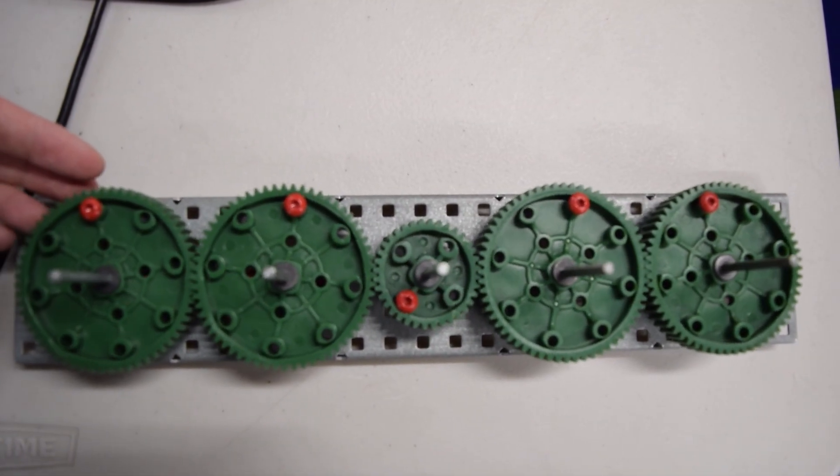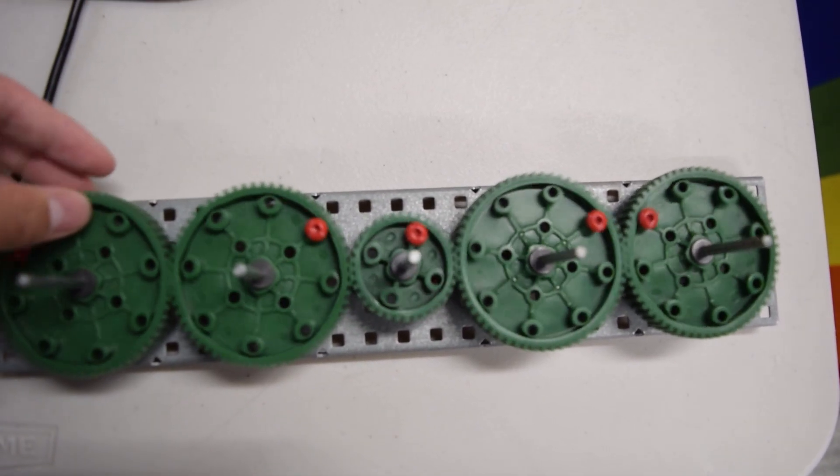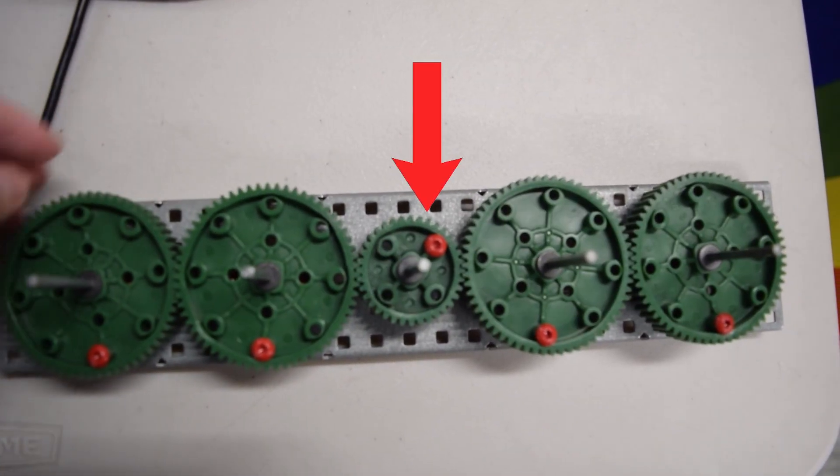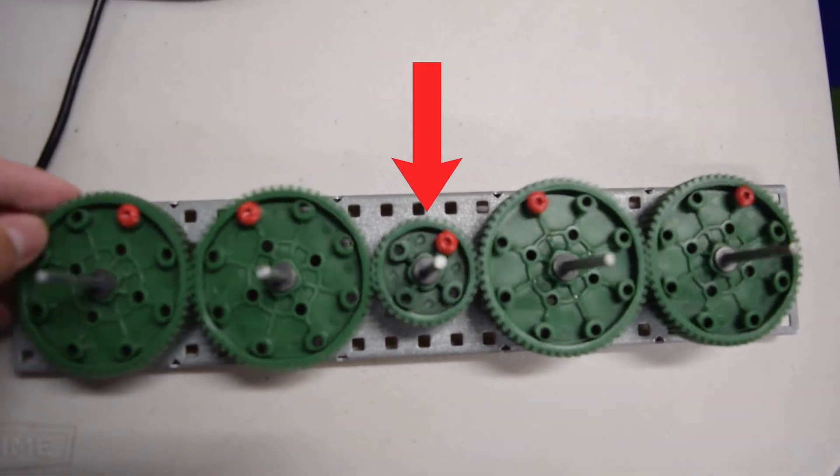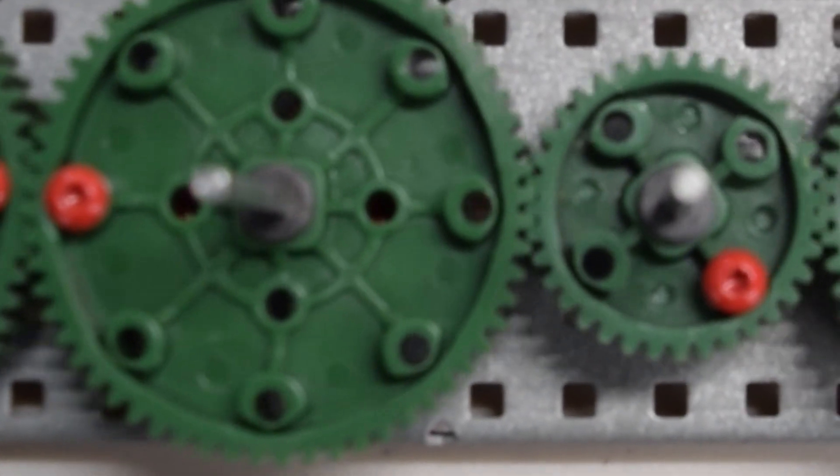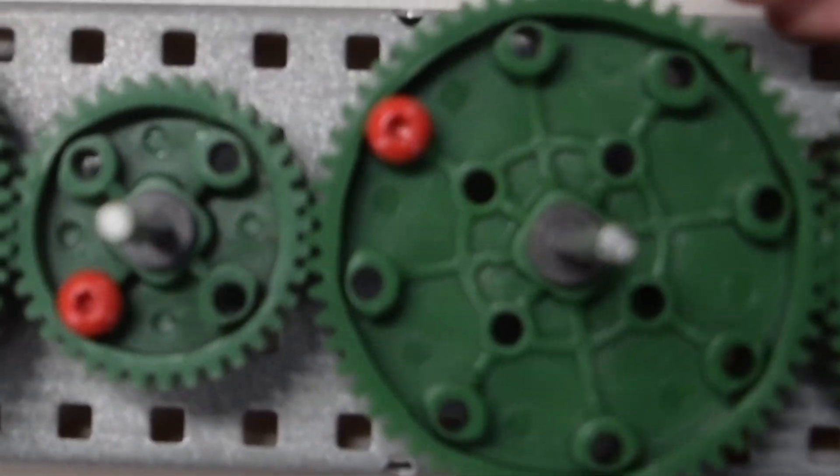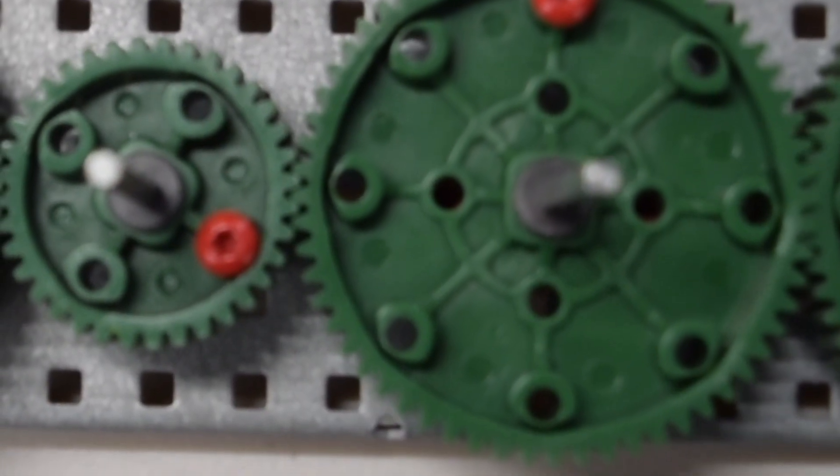Second, gear trains help you control speed and strength. You may have noticed that the smaller gear in the center is spinning considerably faster than the others. That's because a big gear spinning a small gear makes the small one spin faster, but with less strength. A small gear spinning a big one makes it slower, but stronger.